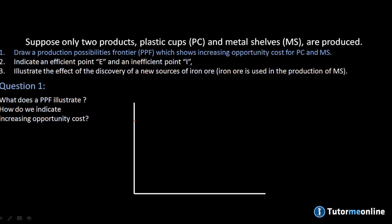The typical PPF graph you find in almost all of your textbooks will look like this. A PPF simply shows us that if we use all of our resources efficiently to its maximum use, we can reach several different combinations of the two goods — in this case, our plastic cups, which I'll put on the vertical axis, and our metal shells, which we can put on the horizontal axis. Each point on the PPF itself indicates a different combination of the two goods. Any point inside the PPF also shows us different combinations, although it is not efficient.